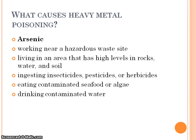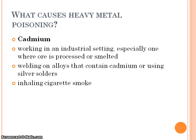Arsenic poisoning can result from working near a hazardous work site, living in an area with high levels of arsenic in rocks, water, and soil, ingesting insecticides, pesticides, or herbicides, eating contaminated seafood or algae, or drinking contaminated water. Cadmium poisoning can occur from working in an industrial setting, especially where ore is processed or smelted, welding on alloys that contain cadmium, using silver solder, or inhaling cigarette smoke.